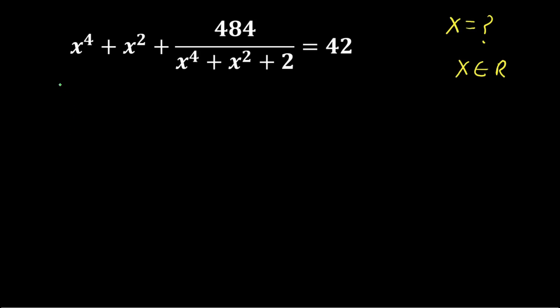Hello students. In this video we are going to solve (x⁴ + x² + 484) divided by (x⁴ + x² + 2), which equals 42. Here we will find out the value of x, and x belongs to real numbers.